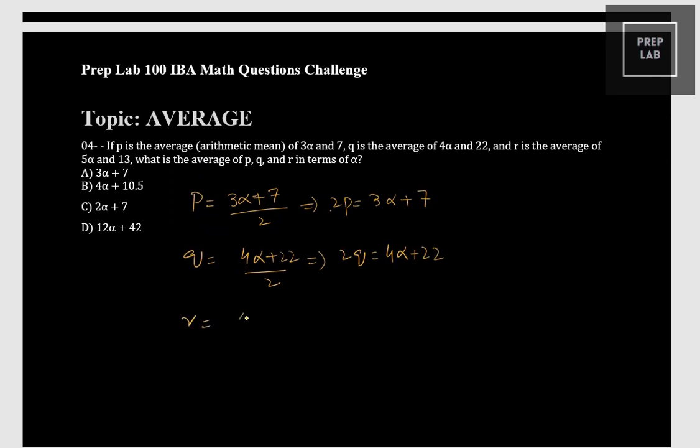Similarly, r is the average of 5 alpha and 13 divided by 2, so 2r = 5 alpha + 13.